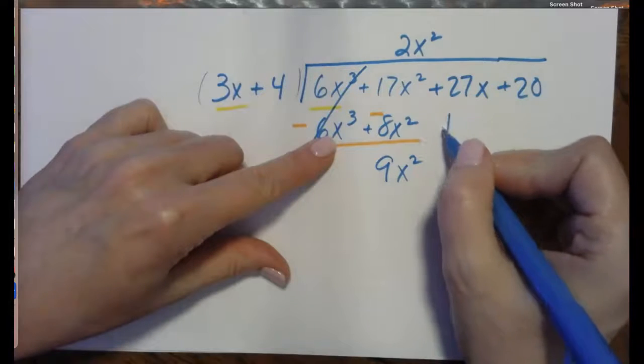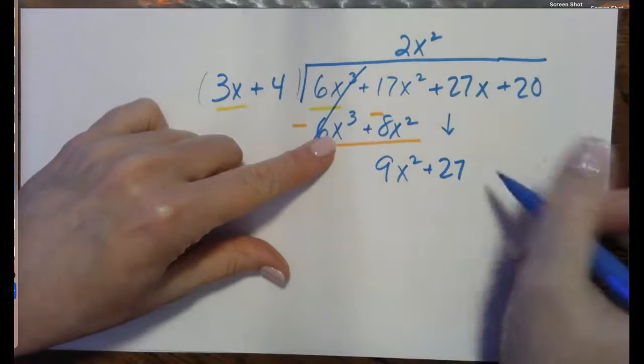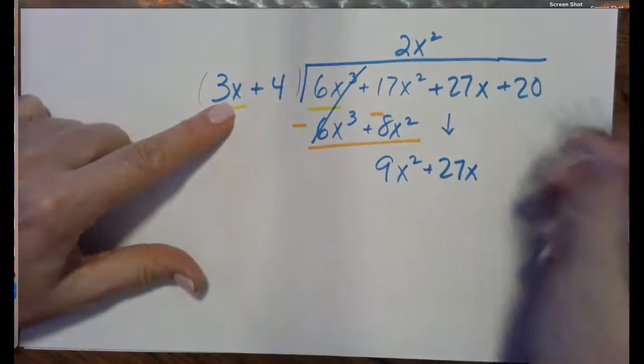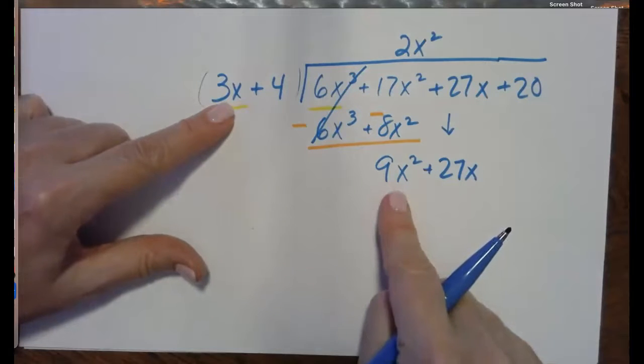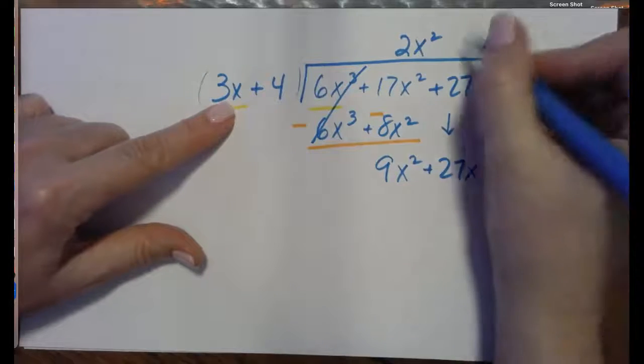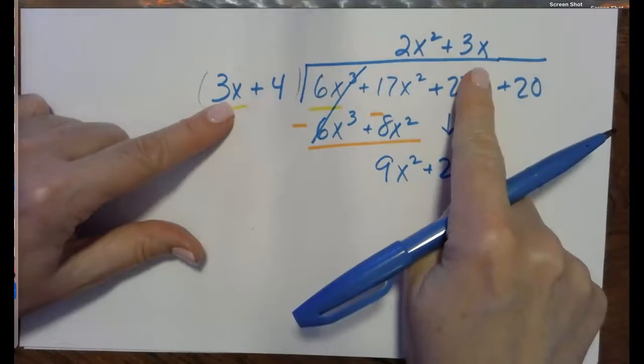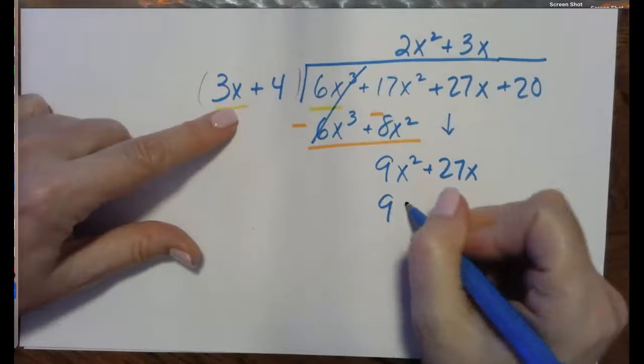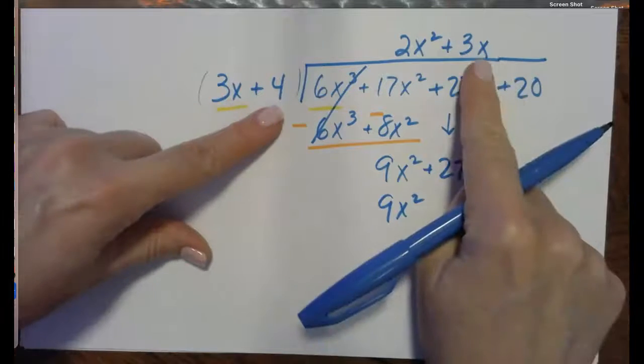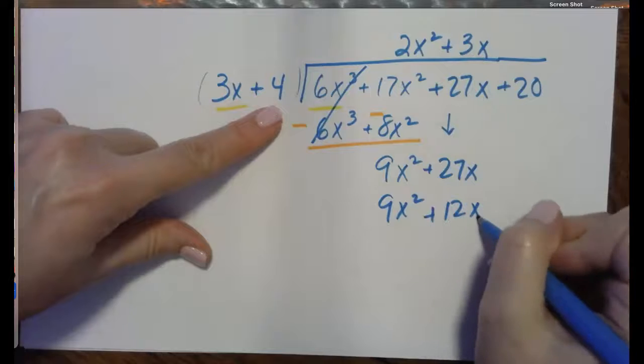Now we will bring down step number 4. We canceled one, therefore we will bring down one. 3x divided into 9x squared is plus 3x. 3x times 3x gives us 9x squared.